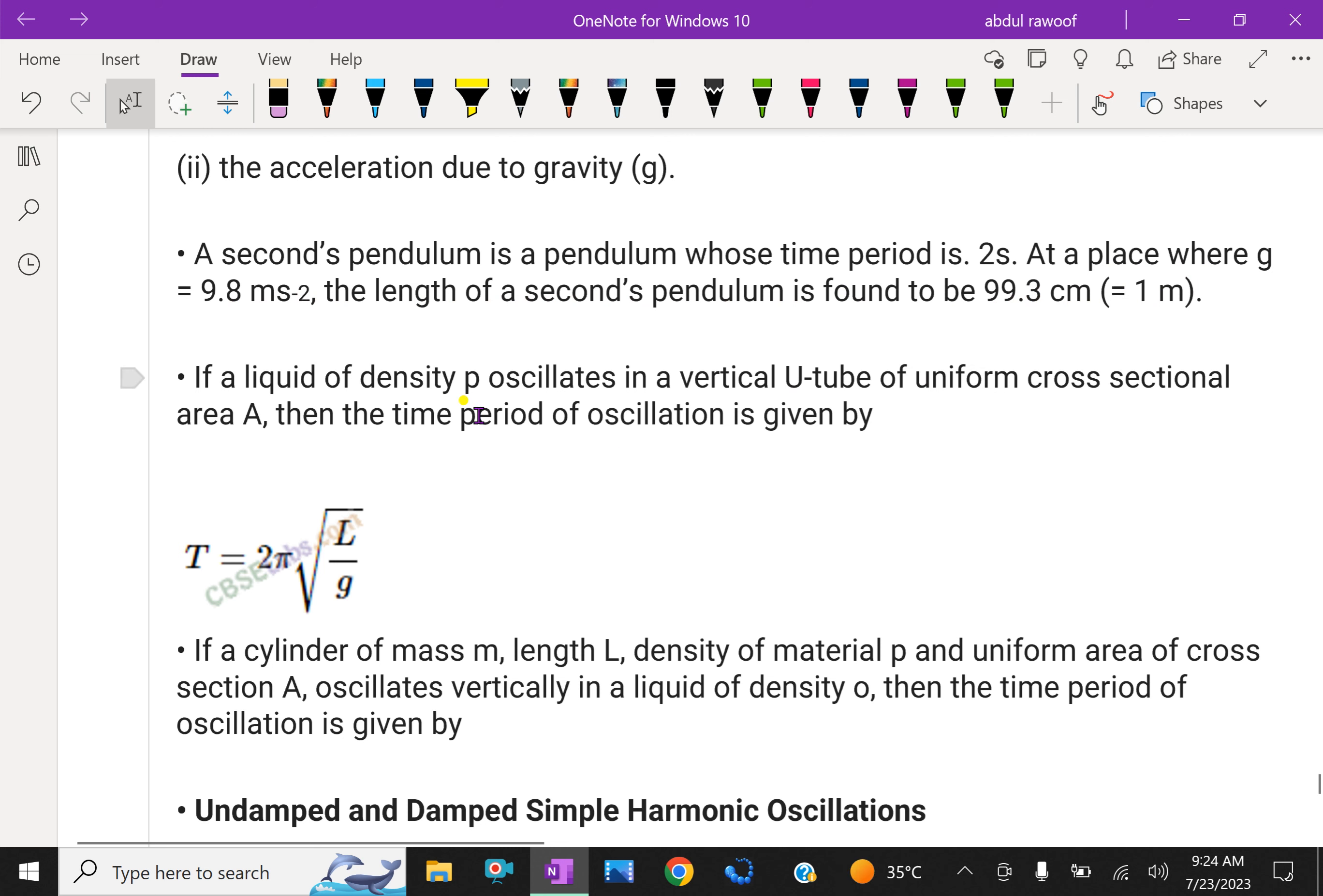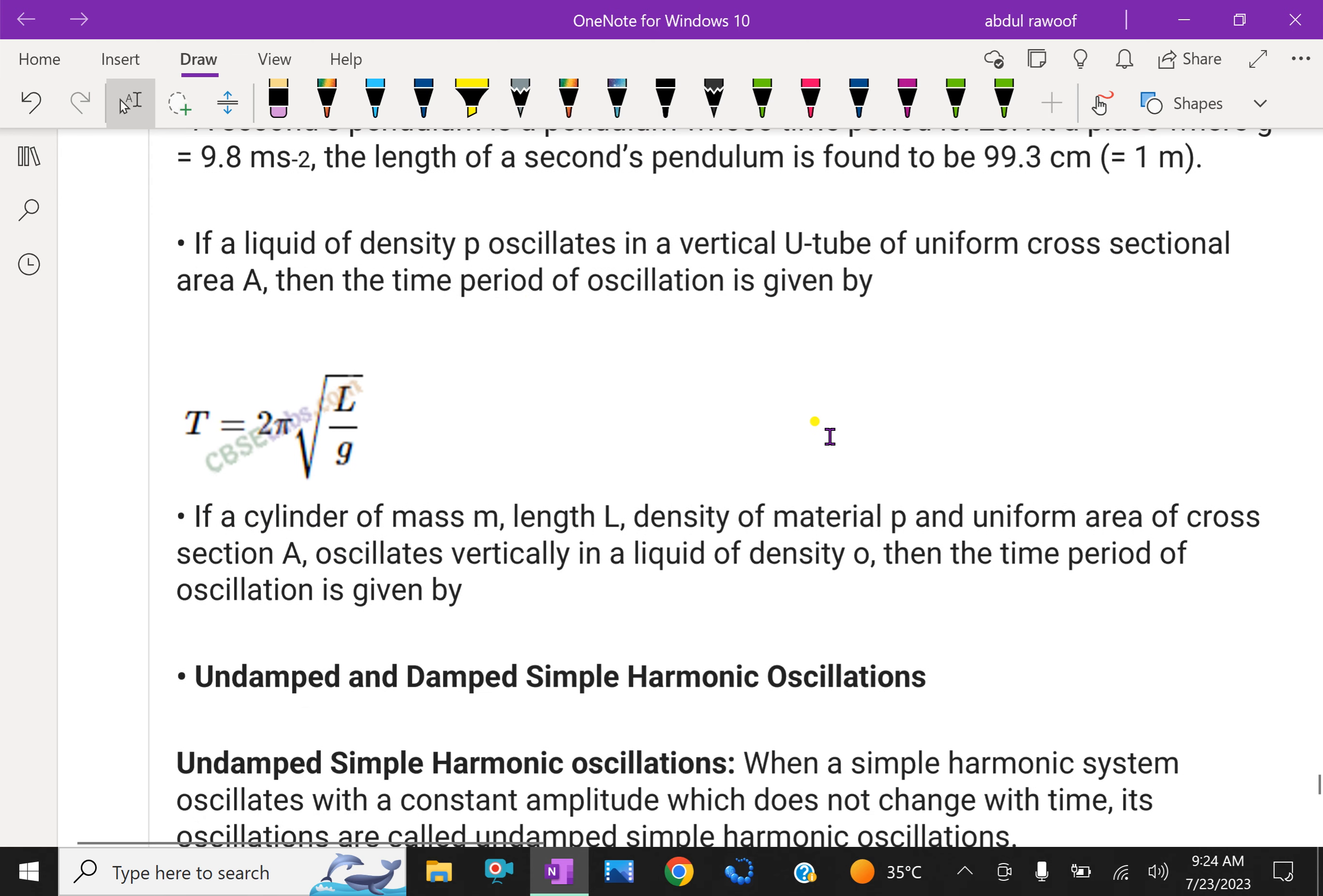If a liquid of density ρ oscillates in a vertical U-tube of uniform cross-sectional area A, then the time period of the oscillation is given by T = 2π√(L/g). This is the simple pendulum formula—time period formula is T = 2π√(L/g).